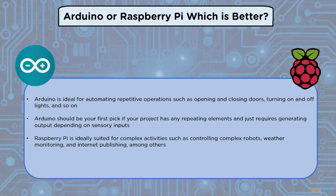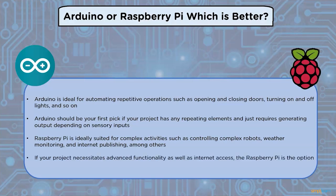Raspberry Pi is ideally suited for complex tasks such as controlling complex robots, weather monitoring, and internet publishing. If your project necessitates advanced functionality as well as internet access, then Raspberry Pi is the option.